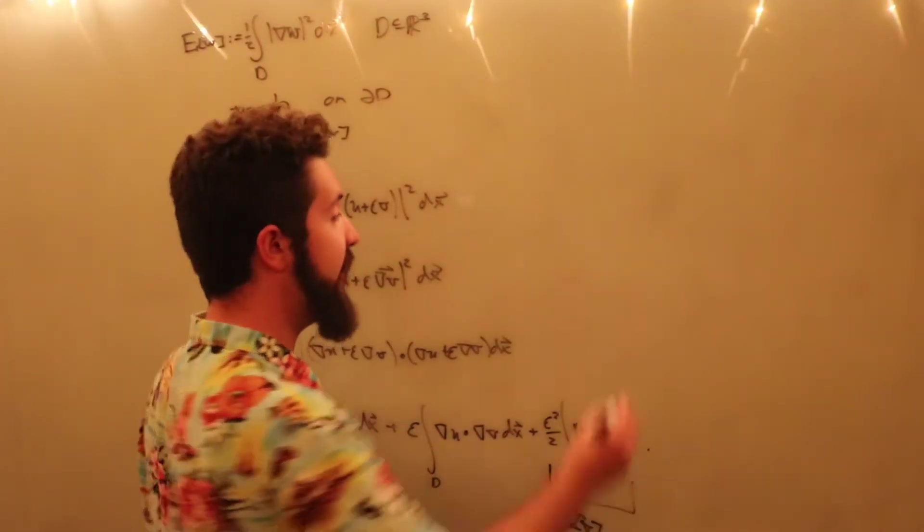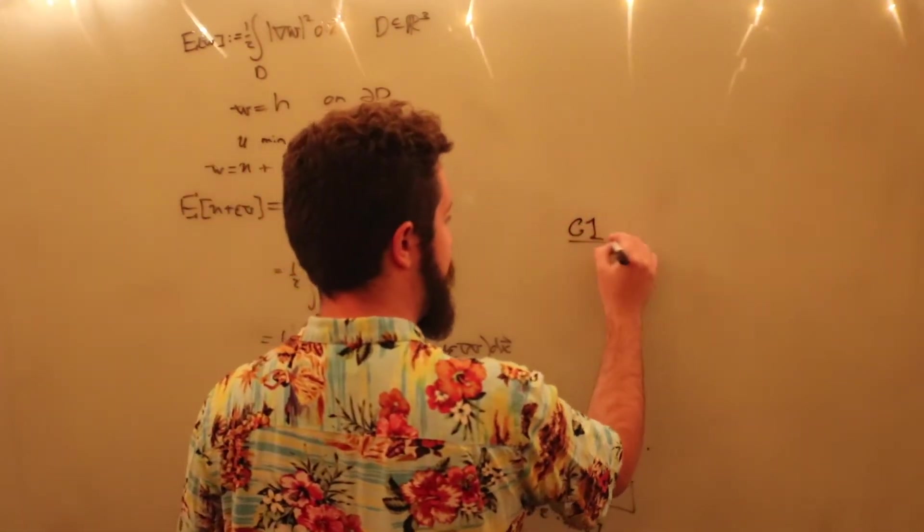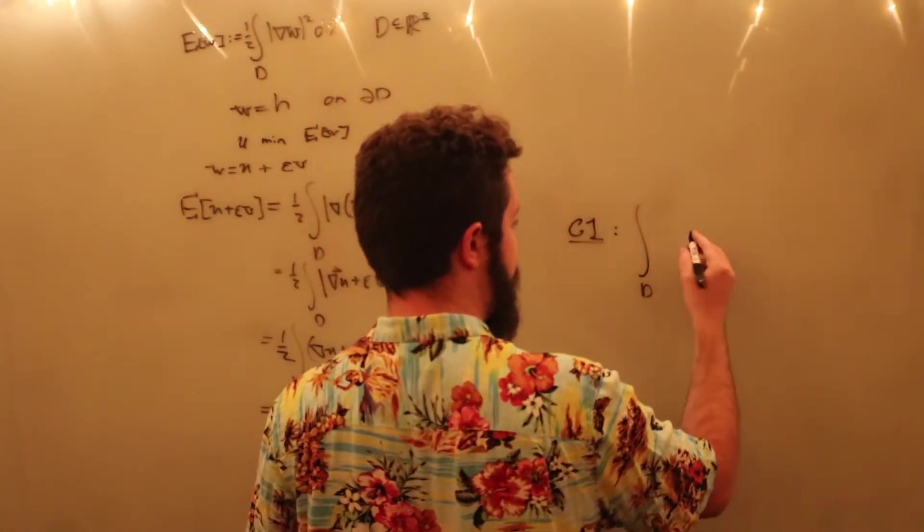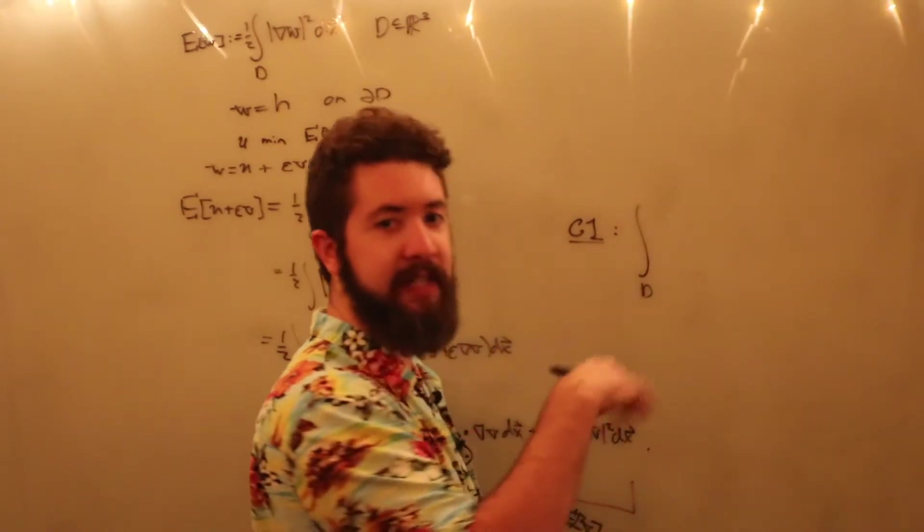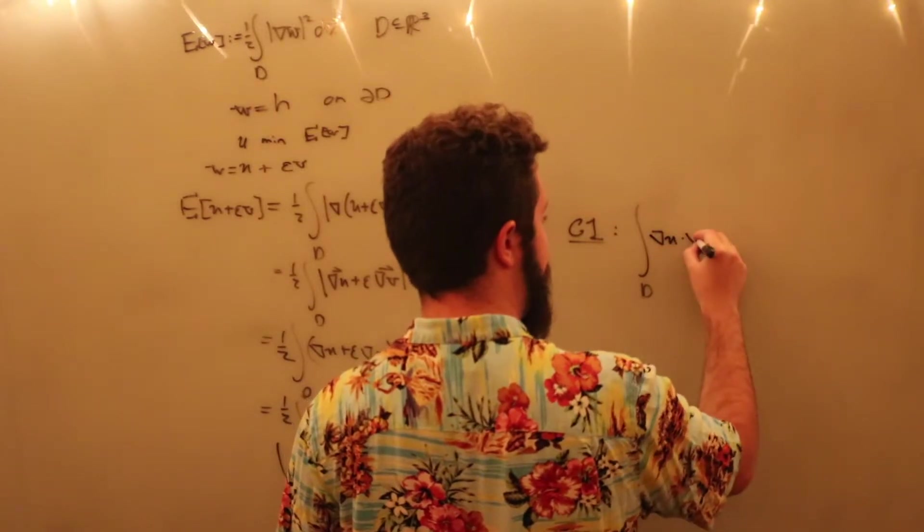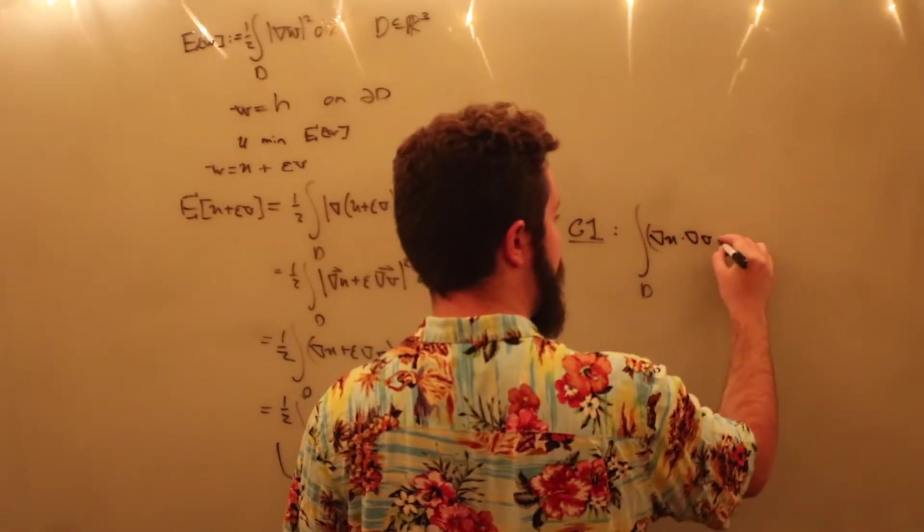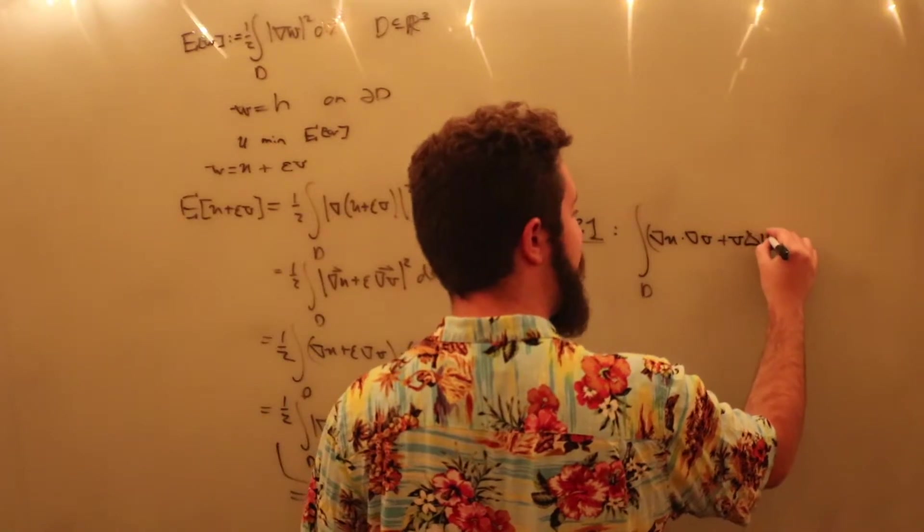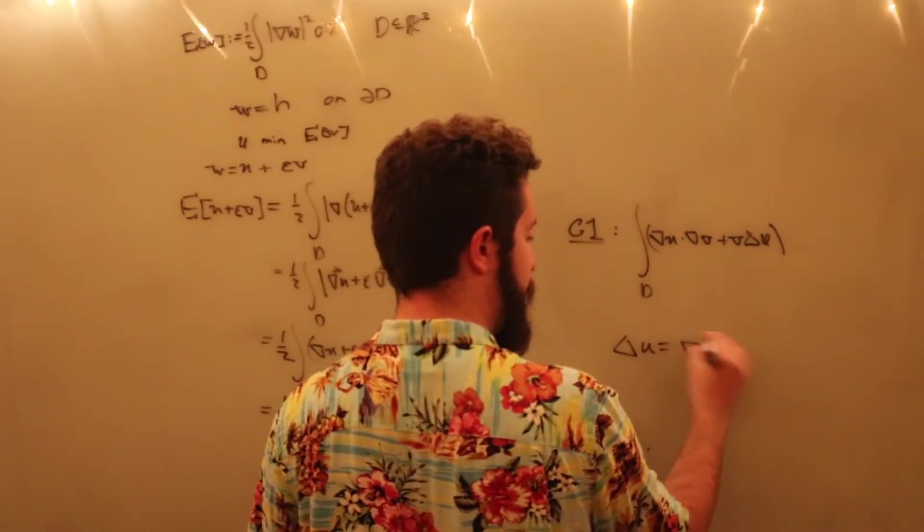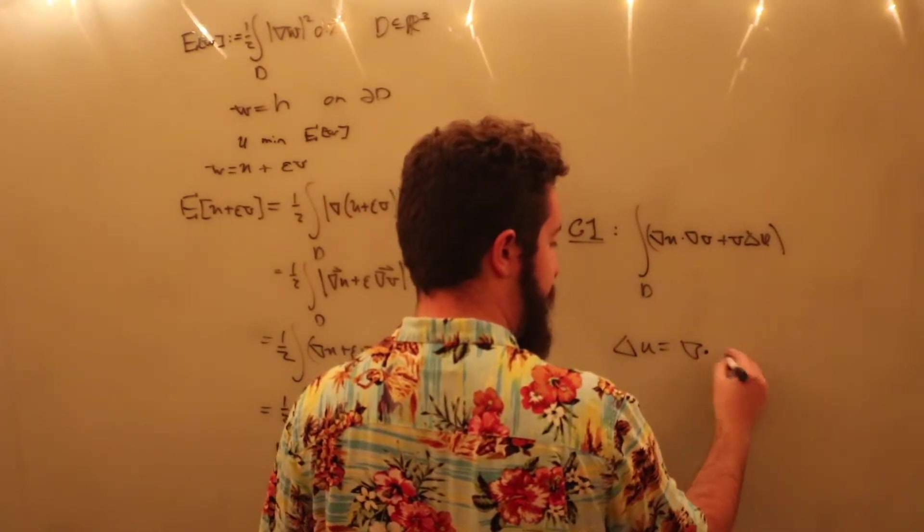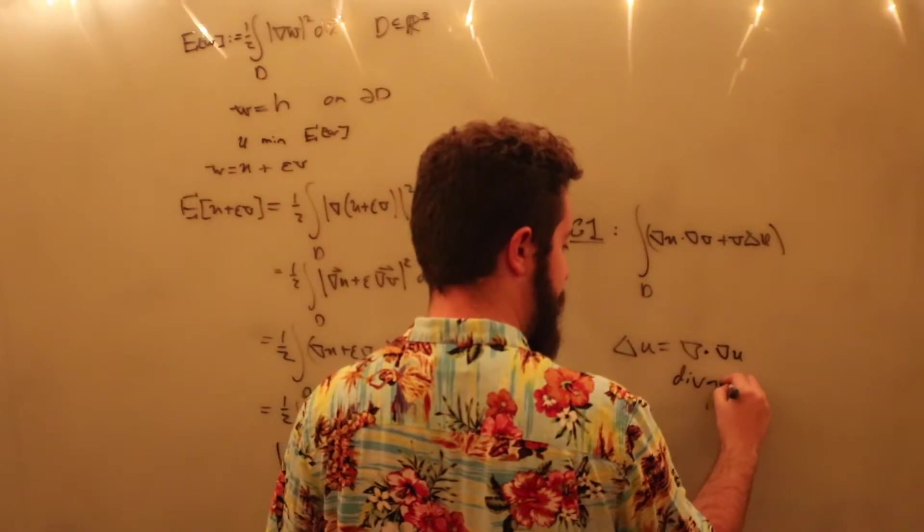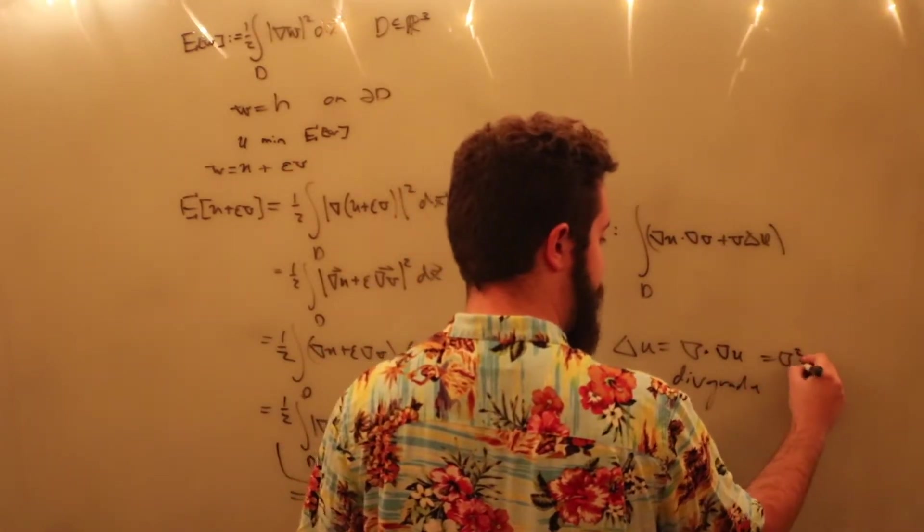Alright, Green's first identity says the following. It says that if we're integrating over some region in space, compact, connected, the whole bit. And if we have grad u dotted with grad v plus v times the Laplacian of u, right, where Laplacian of u is equal to the divergence of the gradient of u. Div grad u, div grad u, also del squared u.